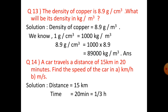Question 14: A car travels a distance of 15 kilometers in 20 minutes. Find the speed of the car in kilometer per hour and part B in meter per second. Distance is given as 15 kilometers. Time is 20 minutes. We need to convert minutes to hours. Since 1 hour is 60 minutes, 1 minute is 1/60 hour, so 20 minutes equals 1/60 into 20, which equals 1/3 hour.